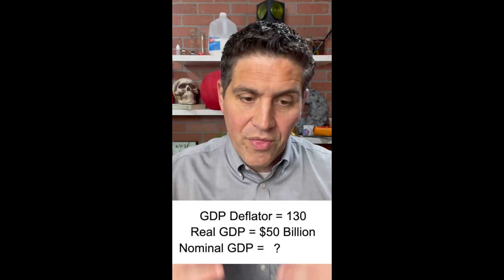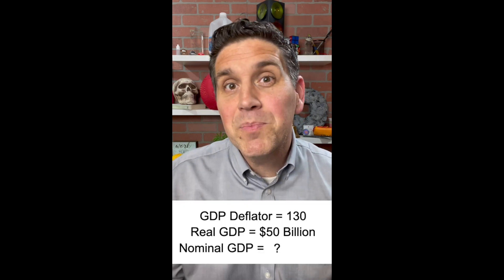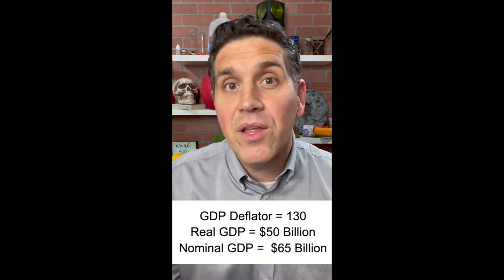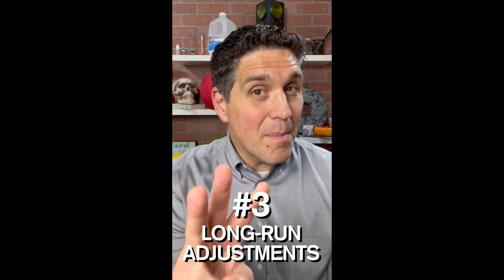And just like the CPI, the deflator tells you how much prices have changed. So if it's 130, that means prices increased 30%.